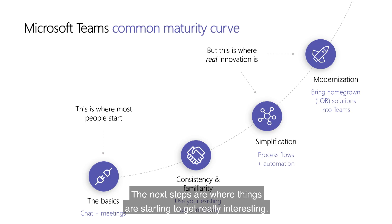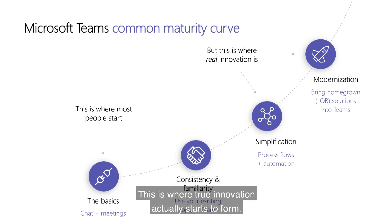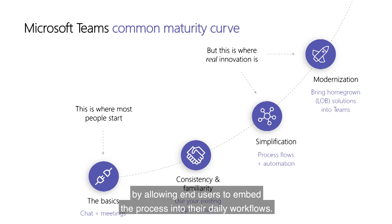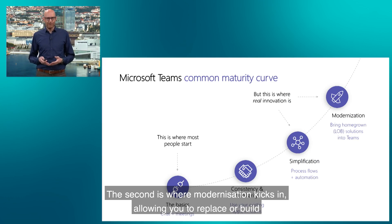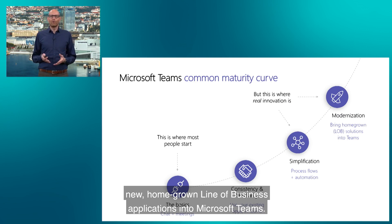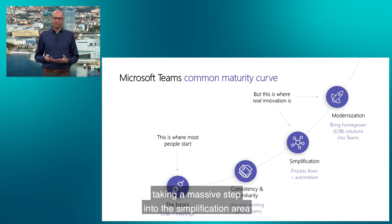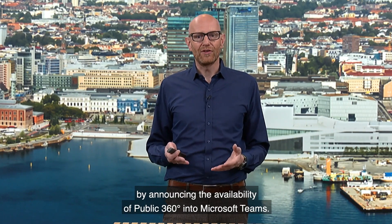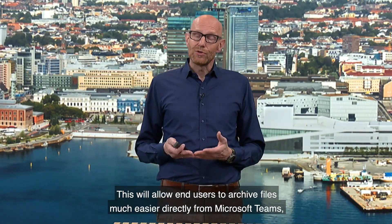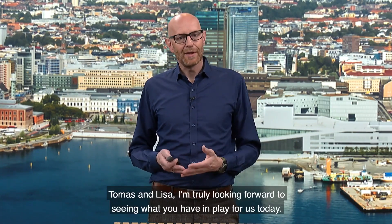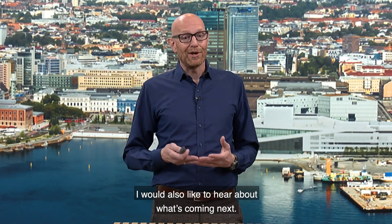The next steps are where things get really interesting, because this is where true innovation starts to form. First is the simplification phase, where you can make your established business processes easier to execute by allowing end users to embed the process into their daily workflows. The second is where modernization kicks in, allowing you to replace or build new homegrown line-of-business applications into Microsoft Teams. Today I am very excited to see Tieto Evry, one of our biggest and most important partners, taking a massive step into the simplification area by announcing the availability of Public 360 in Microsoft Teams. This will allow end users to archive files much more easily directly from Teams where they already do the majority of their work.